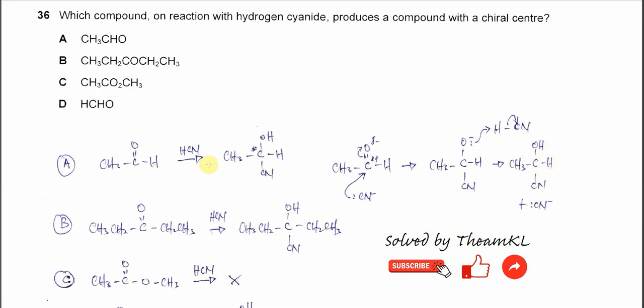The product that's produced has four different groups: one, two, three, four. So this is a chiral center.